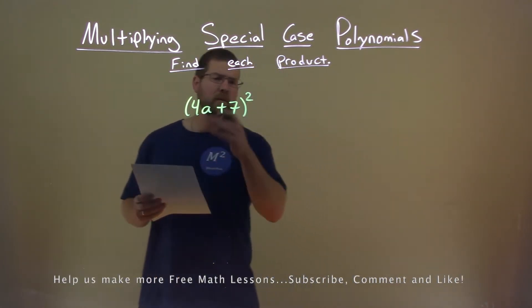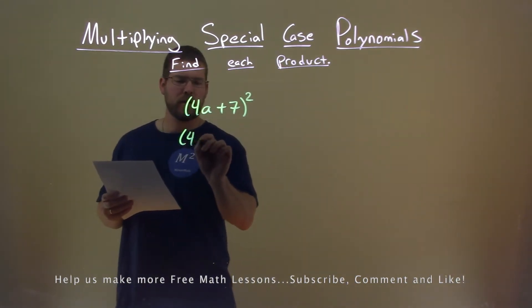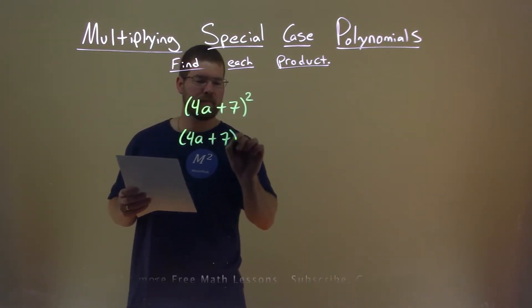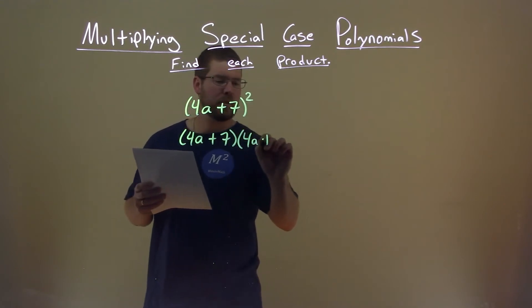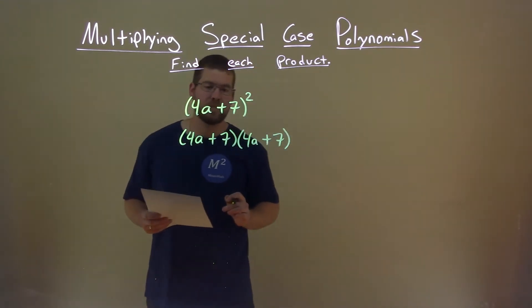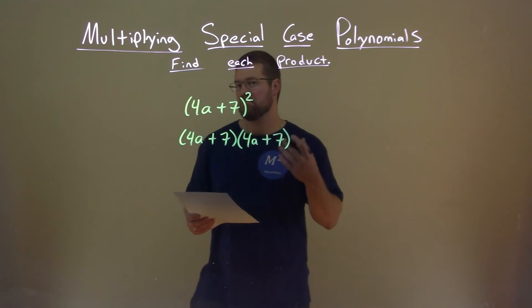What we know about something being squared is it's the same thing as multiplying itself twice. So we have 4a plus 7 times 4a plus 7. Now from here, I need to simplify.